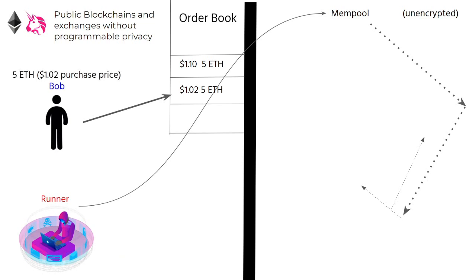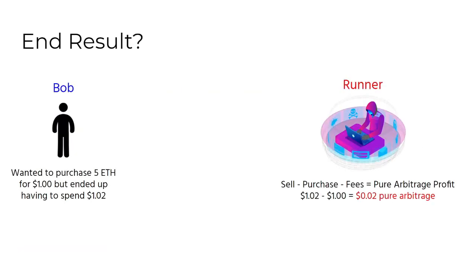Unfortunately for Bob, the only available ETH for purchase are the 5 ETH posted by the front-runner for $1.02, instead of the $1 sell price Bob had originally seen on the orderbooks. Bob ends up with 5 ETH purchased, but unfortunately he got front-run. Bob wanted to purchase 5 ETH for $1, but he ended up having to spend $1.02.